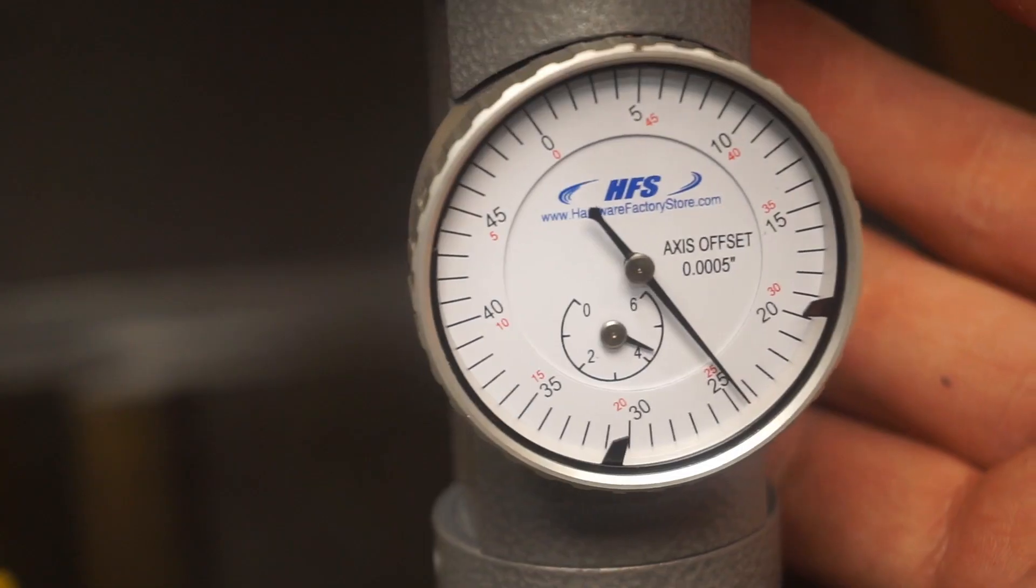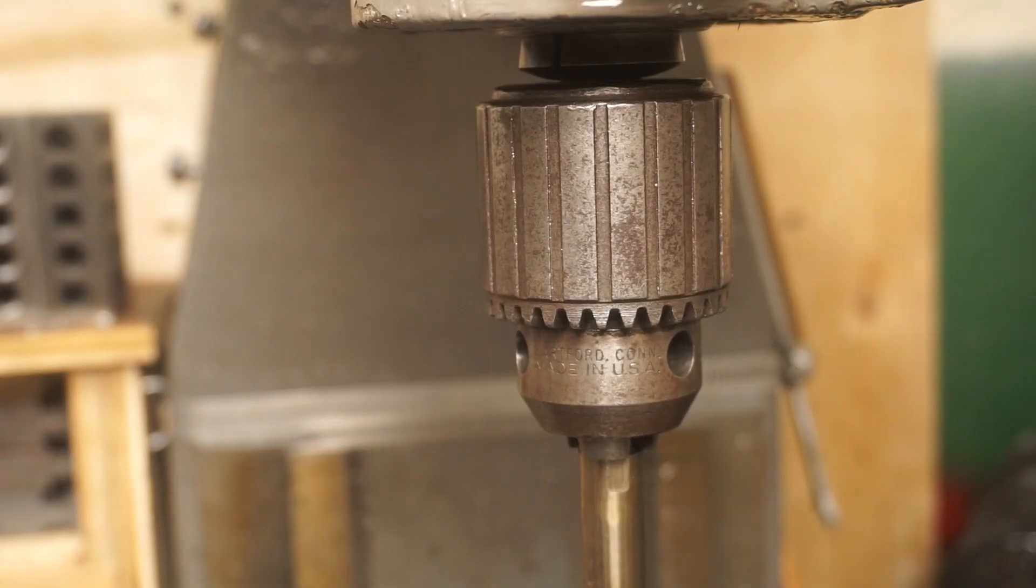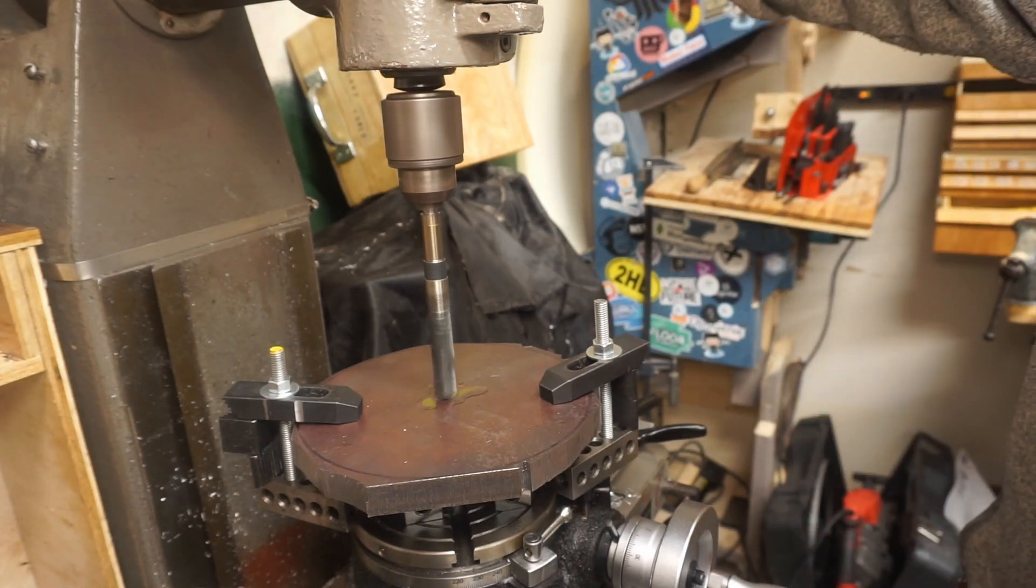I checked afterwards, and there was less than a thou of run out across the circumference. That's good enough for me. Now that I've got the part positioned, I'm going to bore the inside hole to its final diameter.